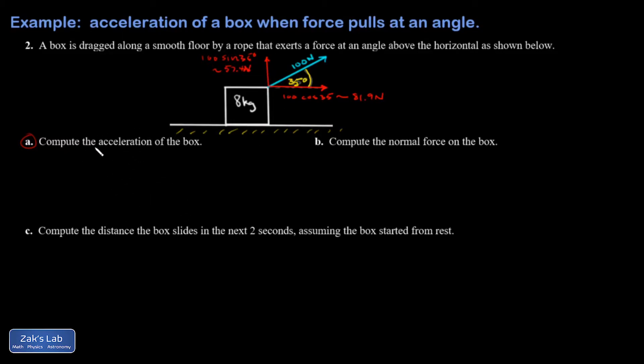All right, so let's answer part A. What I'm doing here is looking at Newton's second law in the x direction. So I'm going to write F net in the x direction is equal to the mass times the acceleration in the x direction. And there's only one force acting horizontally, so this is pretty simple. 81.9 newtons is going to be the mass, which is 8, times the x acceleration.